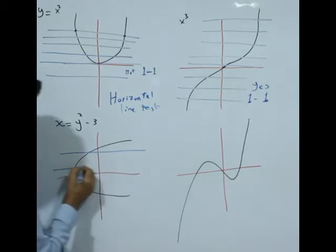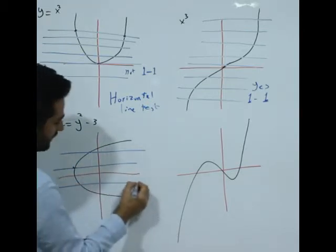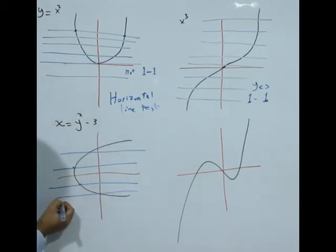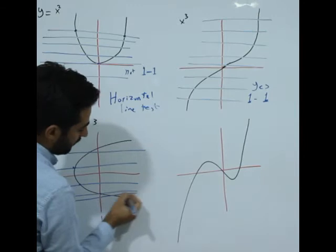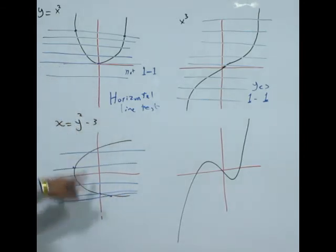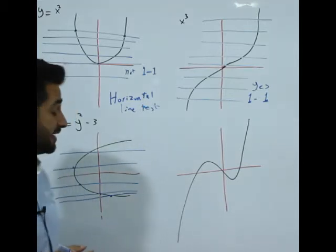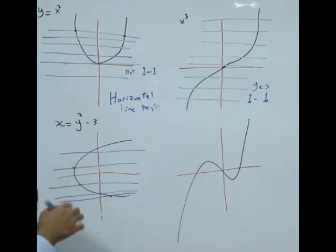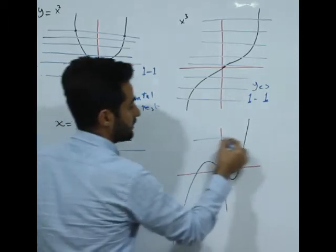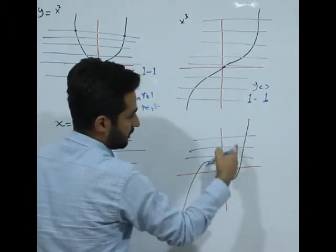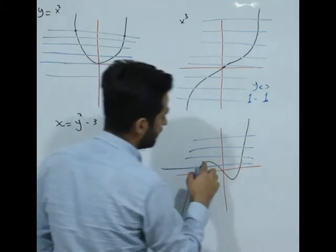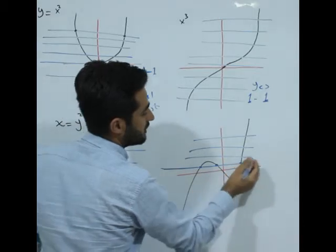How about this one? Let's draw a horizontal line. It touches one time, one time, and one time. Even if you draw it here, it touches only one time. So those horizontal lines each touch only one time. But here it touches more than two times, so this is not a one-to-one function.